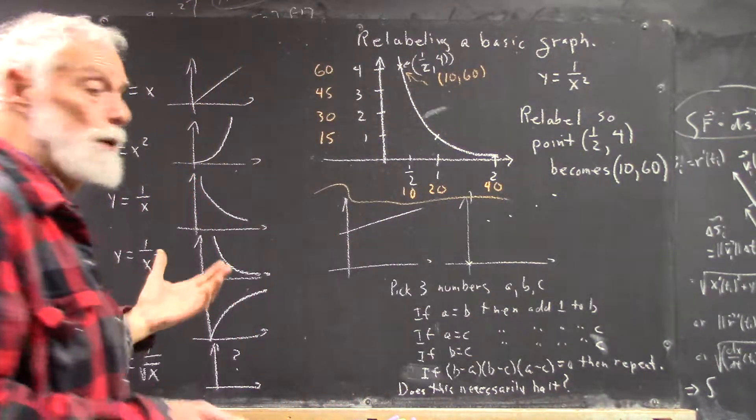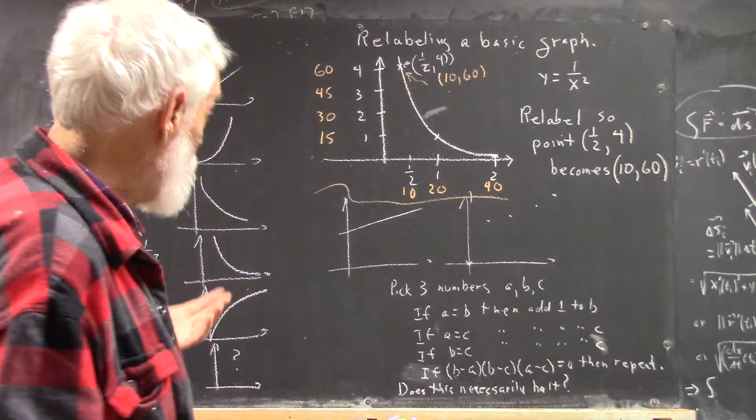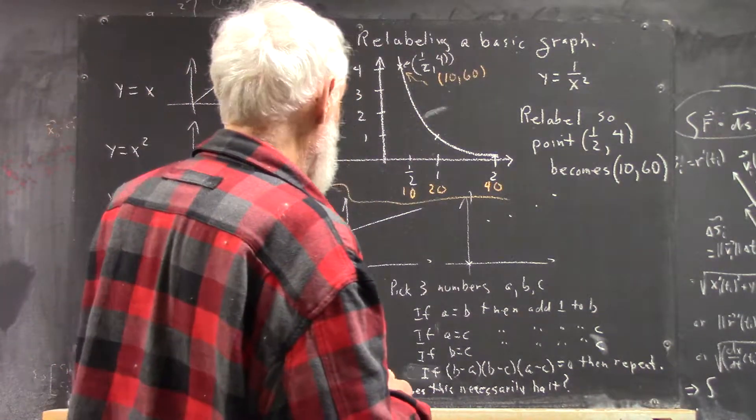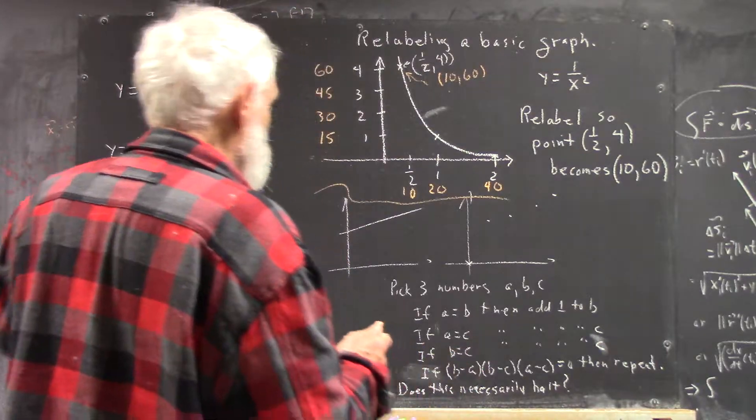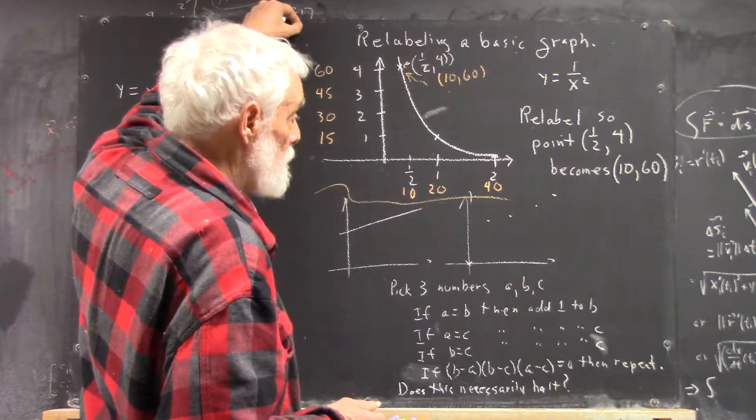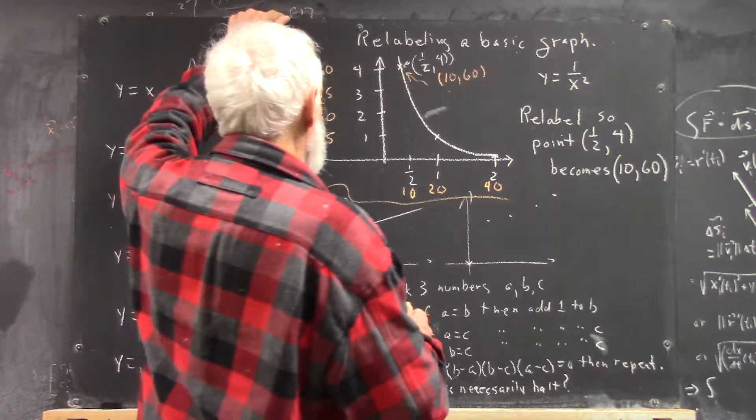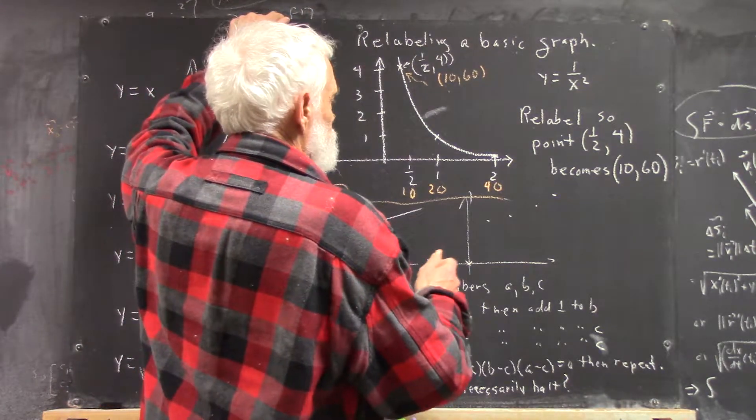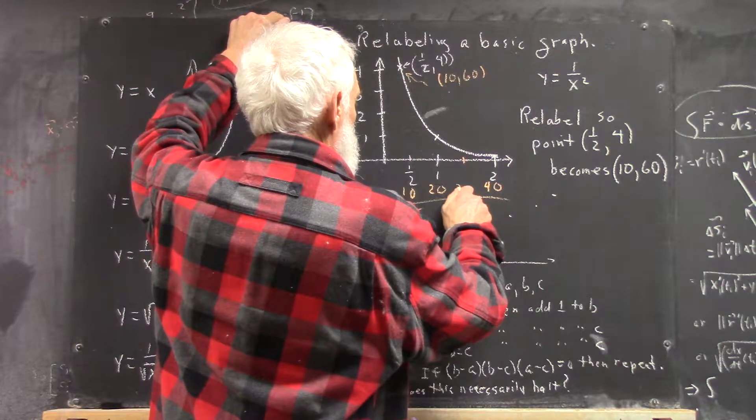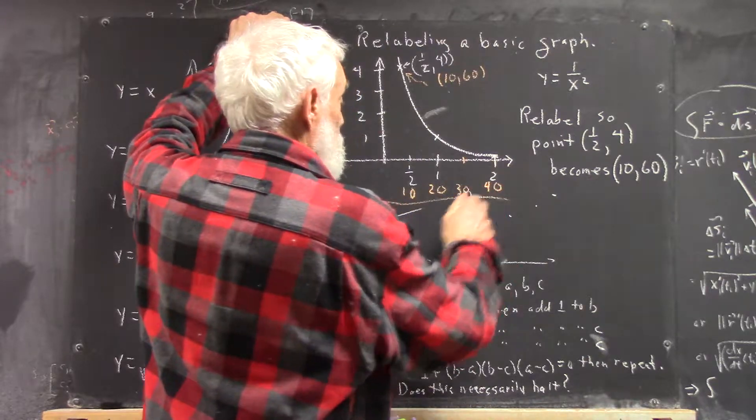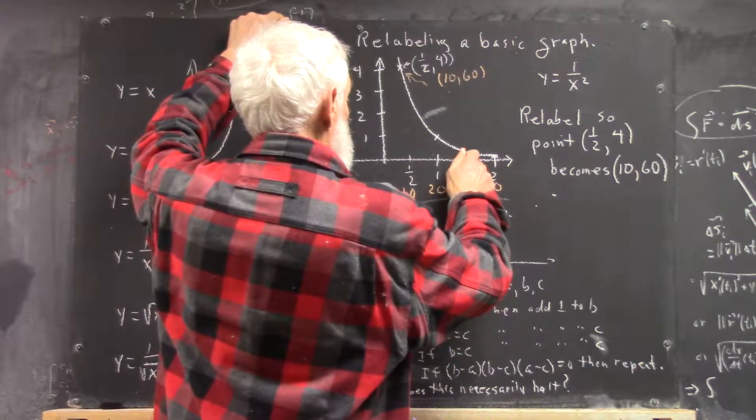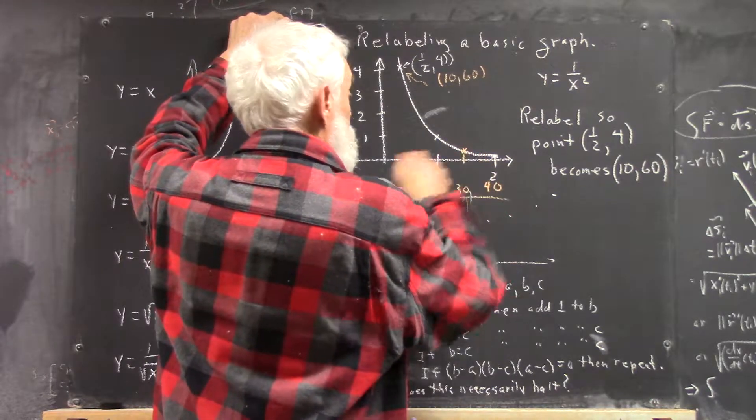So now we have a whole new labeling. Now, if this is a new function, then we can say, for example, that if we want to find the new value of y when x equals, let's say, 30, which is halfway between 20 and 40, well, we go up to the graph and we need to figure out the coordinates of this point.